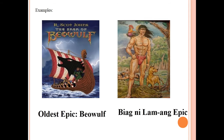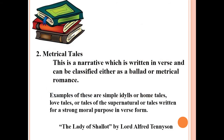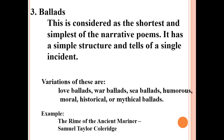The oldest epic is Beowulf, and in the Philippines, the epic is Biag ni Lam-ang. Metrical tales are narratives written in verse, classified either as a ballad or metrical romance. Examples include sample idylls, home tales, love tales, tales of the supernatural, or tales written for strong moral purposes. An example is 'The Lady of Shalott' by Lord Alfred Tennyson. Ballads are considered the shortest and simplest of narrative poems, with a simple structure that tells of a single incident.